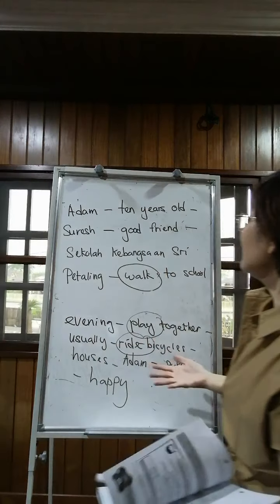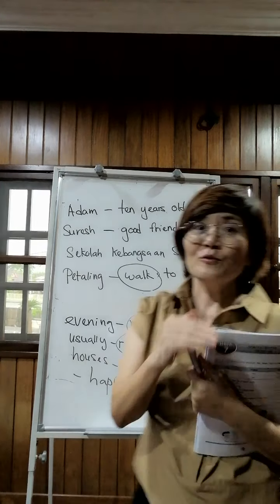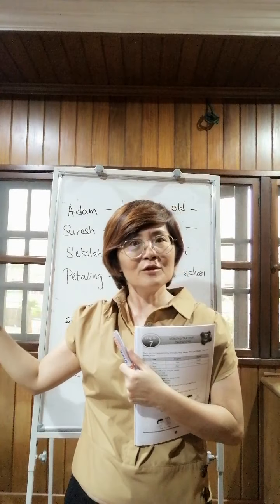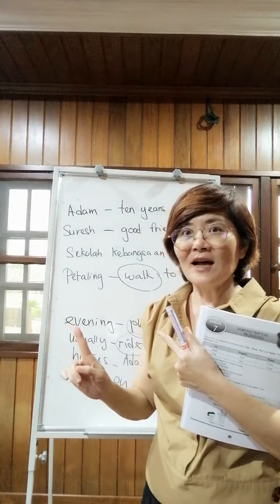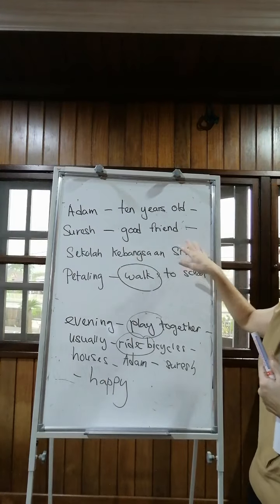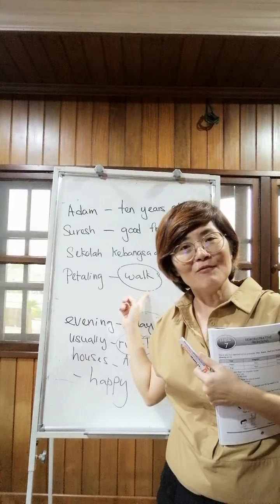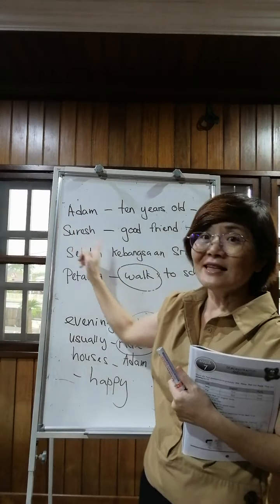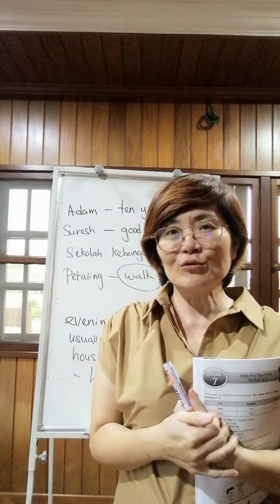So, what is your answer? Suraj is his good friend. Sekolah Kebangsaan Sri Batali — how to say? They study at Sekolah Kebangsaan Sri Batali. Walk to school — walk, no S. So you have to put 'they' because here they said Adam and Suraj. So, they walk to school. Understand?